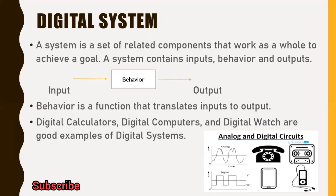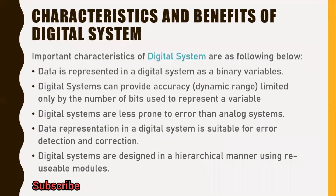Digital systems are used in military, medical equipment, radar, and navigation. Some examples of digital systems are mobile phones, washing machines, televisions, digital calculators, and digital watches.